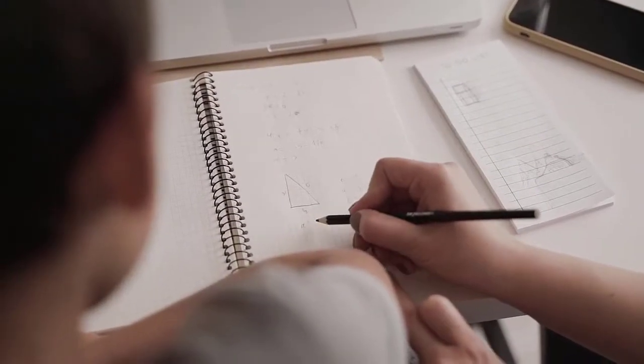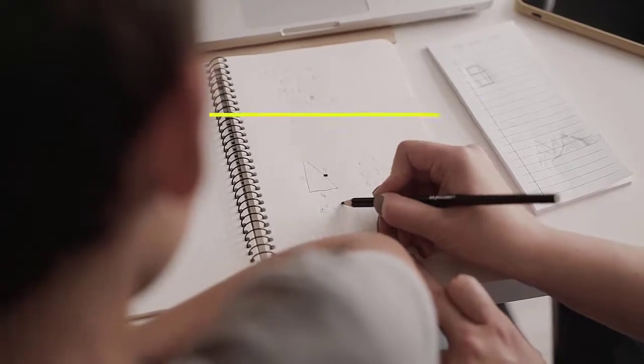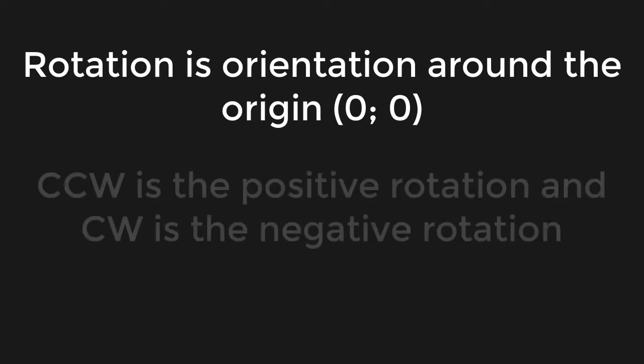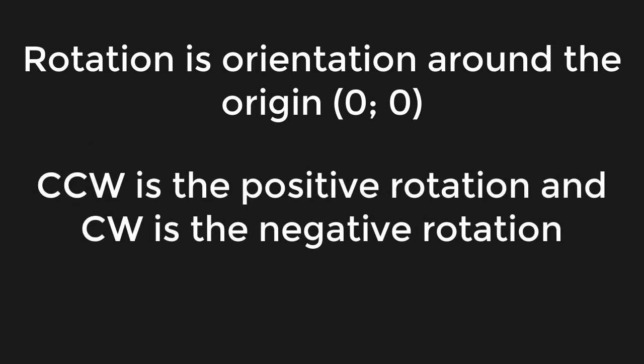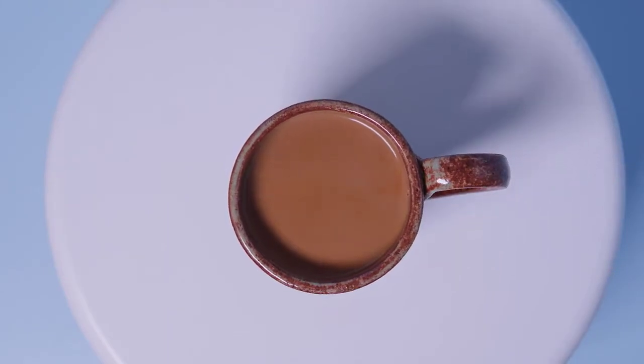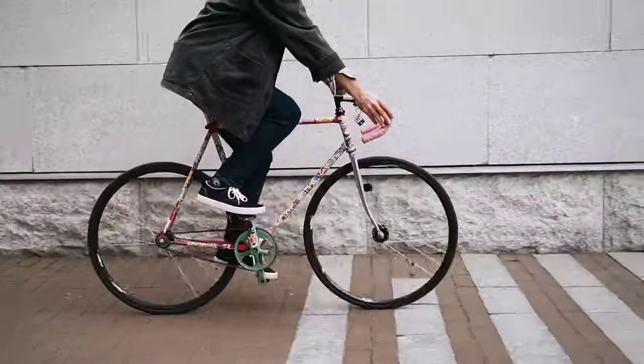That's all you need to know about rotation in the coordinate plane. Let's summarize: rotation is the change of orientation around a fixed point, which is the origin (0, 0). The counterclockwise movement is the positive direction and the clockwise movement is the negative direction. That's it for this video — see you next time, good luck!